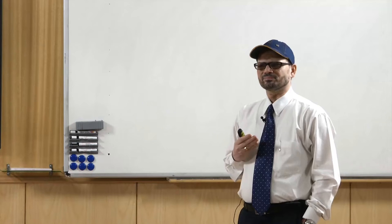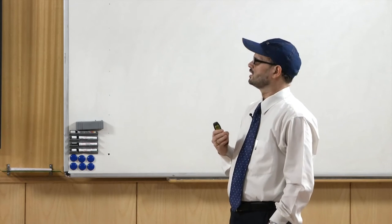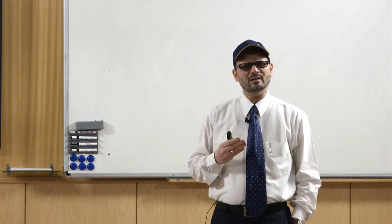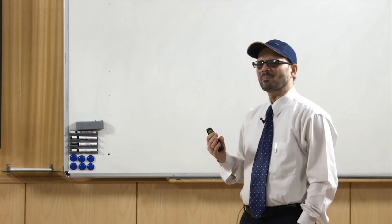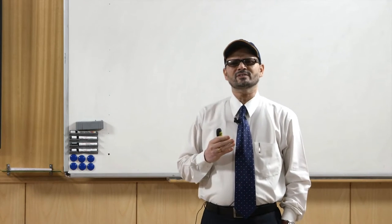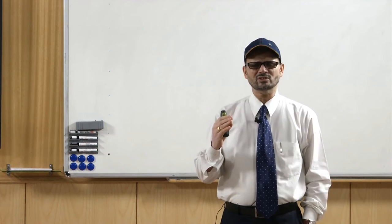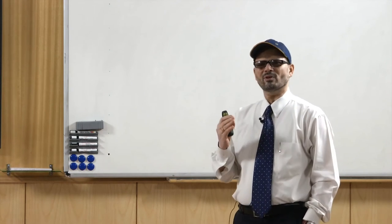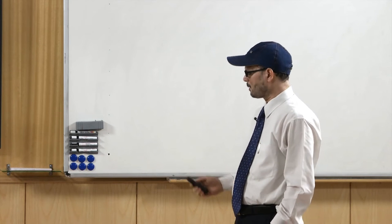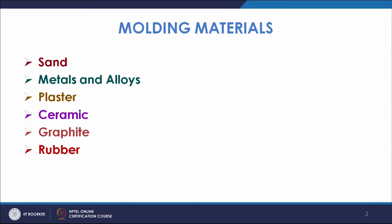A molding material has to envelop the casting. The heat which is liberated from the casting has to be extracted by passing through the molding material. The first requirement is that a molding material must be able to pass all the heat extracted from the casting through it. In that category we have different types of molding materials available. The mostly used molding material is sand.